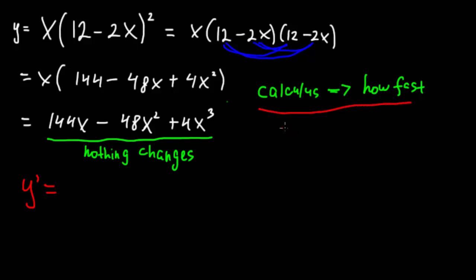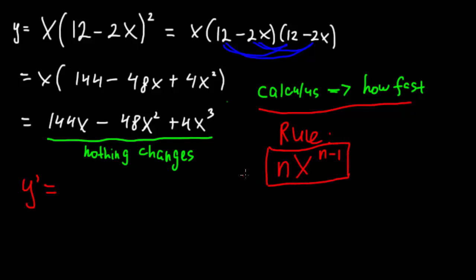Here is the calculus rule: for every term, we put the original exponent in front of the coefficient, then take x and reduce the exponent by 1. The exponents here are 1, 2, and 3. So we put those exponents in front first, reducing each power by 1: the power of 1 becomes 0 (so x⁰ = 1), the power of 2 becomes 1, and the power of 3 becomes 2. So the differentiated function becomes: 144 minus 96x plus 12x squared. This is what we call the derivative of the function.